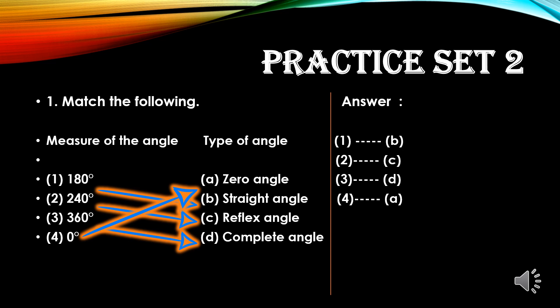Students, now we are going to solve Practice Set 2. The first question is match the following — we have the measure of the angle and type of angle. We have already studied different types of angles. So let's match: 180 degrees is a straight angle. For 240 degrees, any angle between 180 and 360 degrees is called a reflex angle, so the second one will be matched with option C.